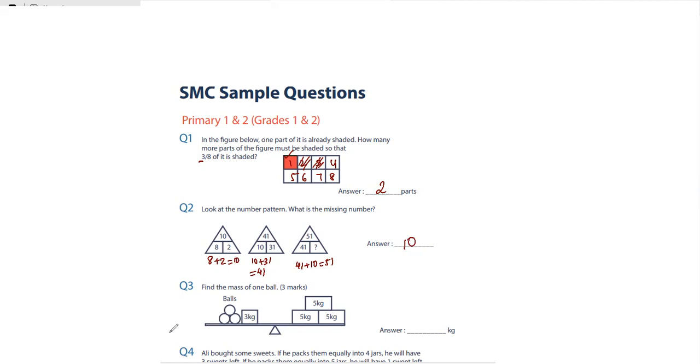Now let's look at question number three. Find the mass of one ball. If you see, this is an equal balance. Whatever is the weight here is the weight here. If you see here 5 plus 5 plus 5, the weight here is 15 kg. So you have three balls plus 3 kg which equals 15 kg.